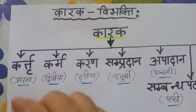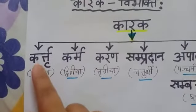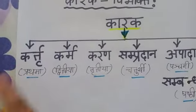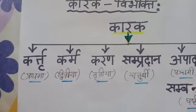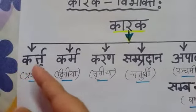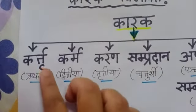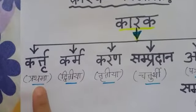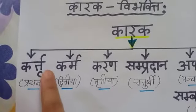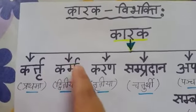How many types of karakas are there? First one: karti karak. Karti means subject — those who are doing the work, that is called karti karak. Karti karake always takes prathama vibhakti. Remember this.